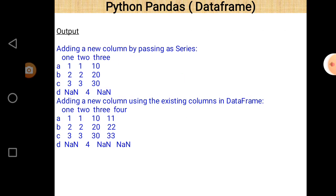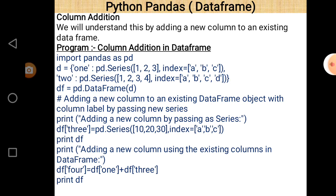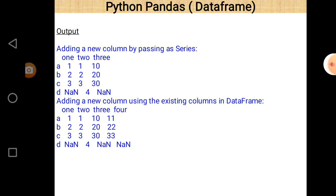Looking at the output, there are three columns originally, and after adding column name three, it appears in the DataFrame. For index value D there is no value in columns one and three, so NaN appears. When we add column four as a combination of columns one and three, column four appears showing the sum, and again NaN appears for index position D since there is no value there.